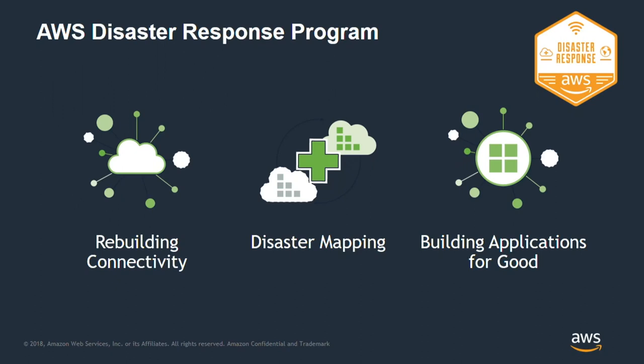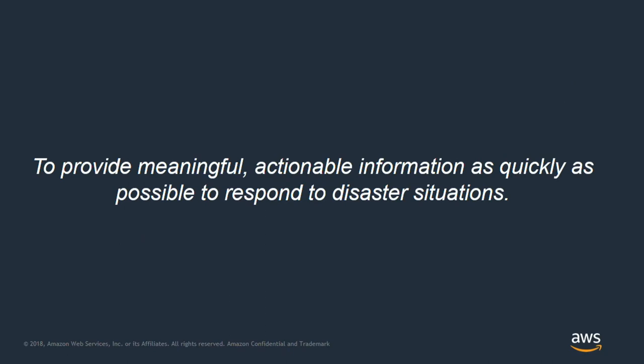I wanted to combine two things: the open data public dataset piece and the disaster response piece we spun up about two years ago. The guiding goal is: to provide meaningful, actionable information as quickly as possible to respond to disaster situations. AWS is a cloud provider and infrastructure company, so I'm thinking about how we can leverage our infrastructure knowledge and what our customers are doing to help in these scenarios.